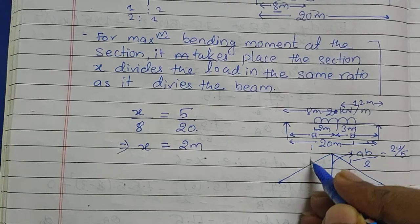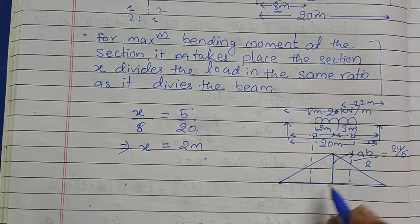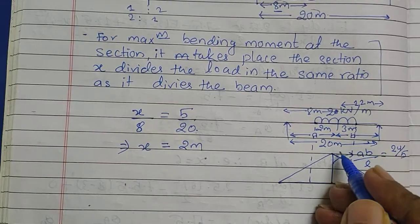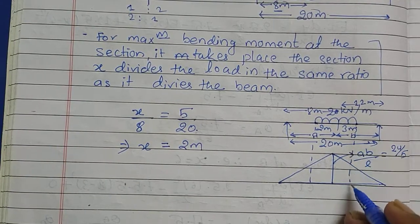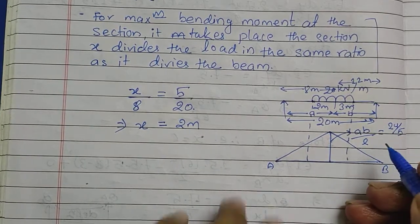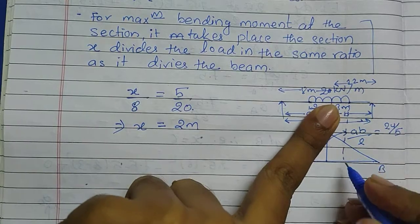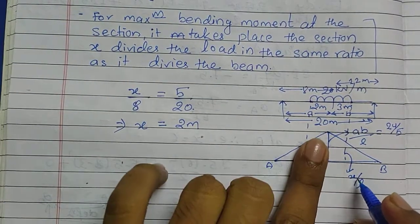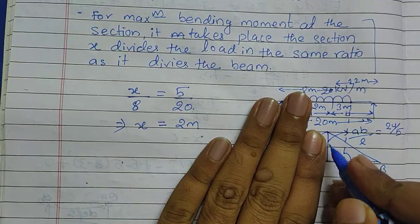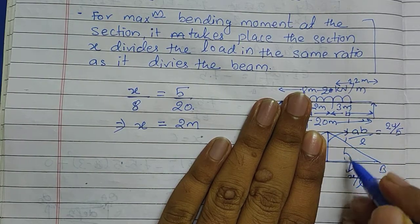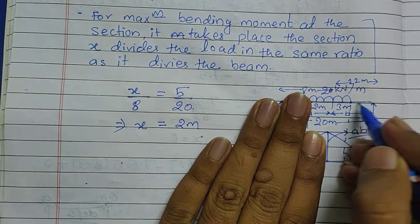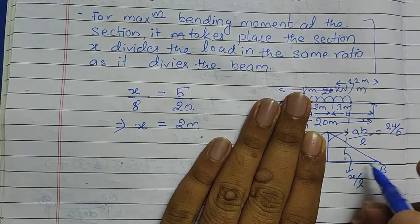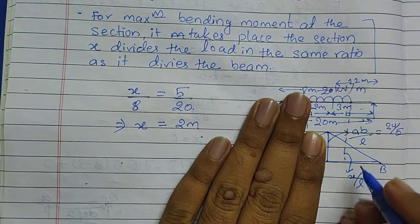Now we need to draw a dotted line to find the ordinate. We have the ordinate of the midpoint as 24/5. We also need to find the ordinates of the two boundary points of the UDL. The triangle in the ILD starts increasing from point B, so X for the first ordinate is measured from that side.